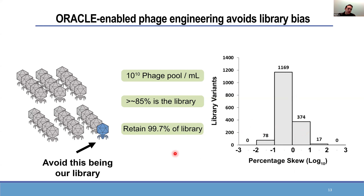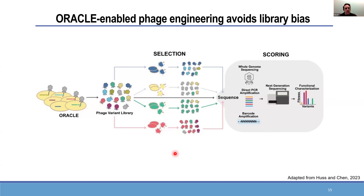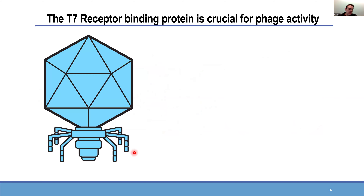ORACLE lets us create big phage libraries without necessitating that those variants can grow on the host we used to make them, allowing us to diversify those pools considerably. So now we talk about testing on different hosts. We take that unbiased library, passage it on different hosts shown in different colors, and the phages that grow more efficaciously on a given host are produced more. We then sequence before and after selection and identify which variants worked on which host. The plots I'm going to show are from the first domain we tested — the T7 bacteriophage receptor binding protein and specifically its tip domain.